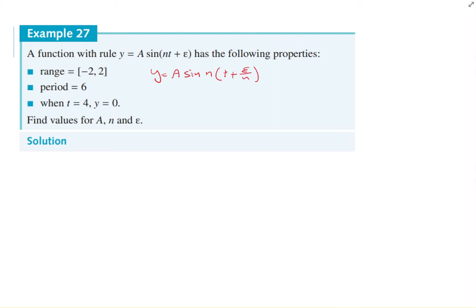Okay, so a function with the rule a sine nt plus epsilon has the following properties. The range is minus 2 to 2. So like always, just put in that little sketch. The range is minus 2 to 2. So there's no vertical translation in this one. So the amplitude, of course, is 2. Remember, you can never have a negative amplitude. The period is 6.